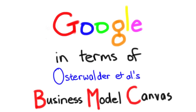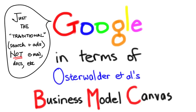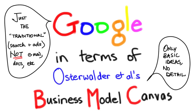We're going to look in this video at Google in terms of Osterwalder et al's Business Model Canvas. Before we start, just a disclaimer. When I say we're going to look at Google, I mean the traditional Google — the search and the ads — not all the corporate products, email and docs they've got nowadays. Similarly, we're really going to look at some basic ideas, no detail, and certainly not all of the facets of the Business Model Canvas.